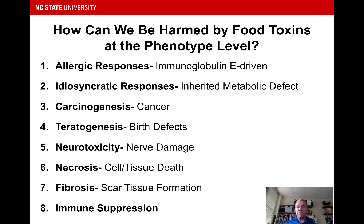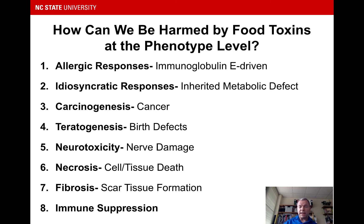Types of harm that can occur at a phenotypic or macro level include allergic responses — things related to immunoglobulin E — ranging from hives all the way through severe anaphylactic shock. Idiosyncratic responses are inherited metabolic defects that manifest when a particular food is eaten. Carcinogenesis or cancer, teratogenesis which is birth defects, neurotoxicity, as well as necrosis, fibrosis, and immune suppression are just a few of the phenotype-level harms that can result from hazards in our foods.